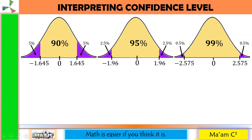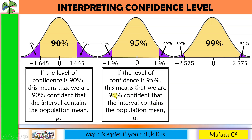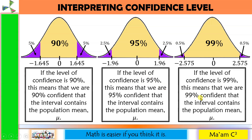How do we interpret confidence level? If the level of confidence is 90%, this means we are 90% confident that the interval contains the population mean mu. If the confidence level is 95%, we are 95% confident that the interval contains the population mean mu. And for 99%, we are 99% confident that the interval contains the population mean mu.